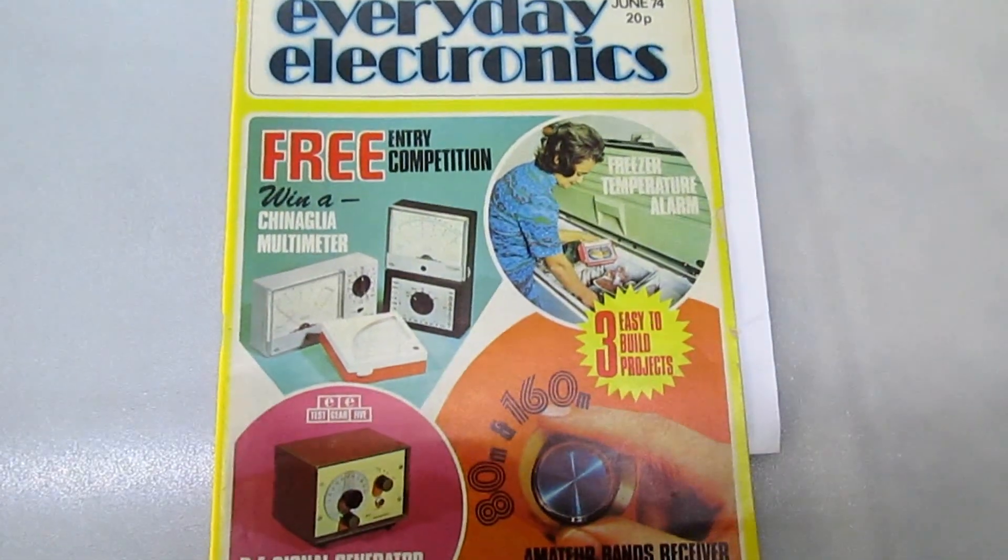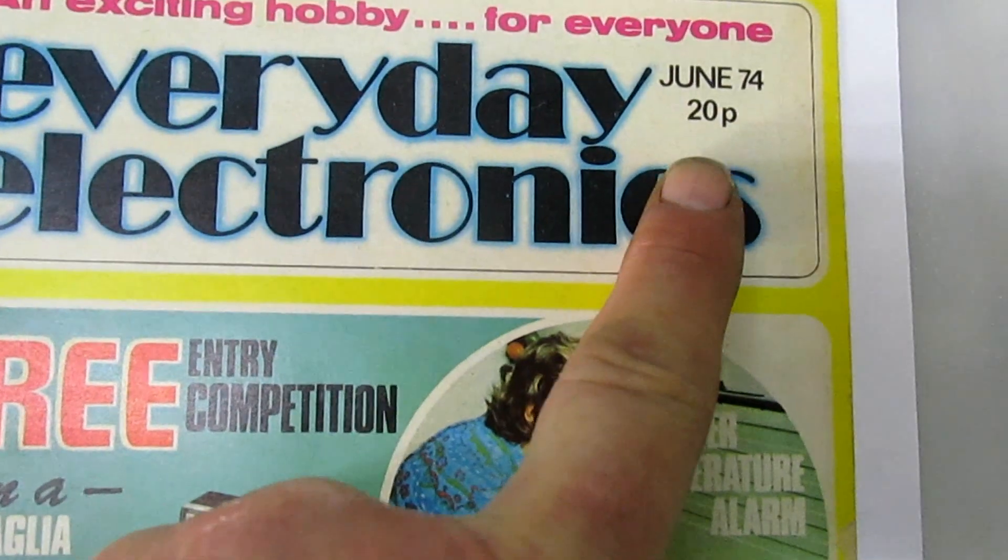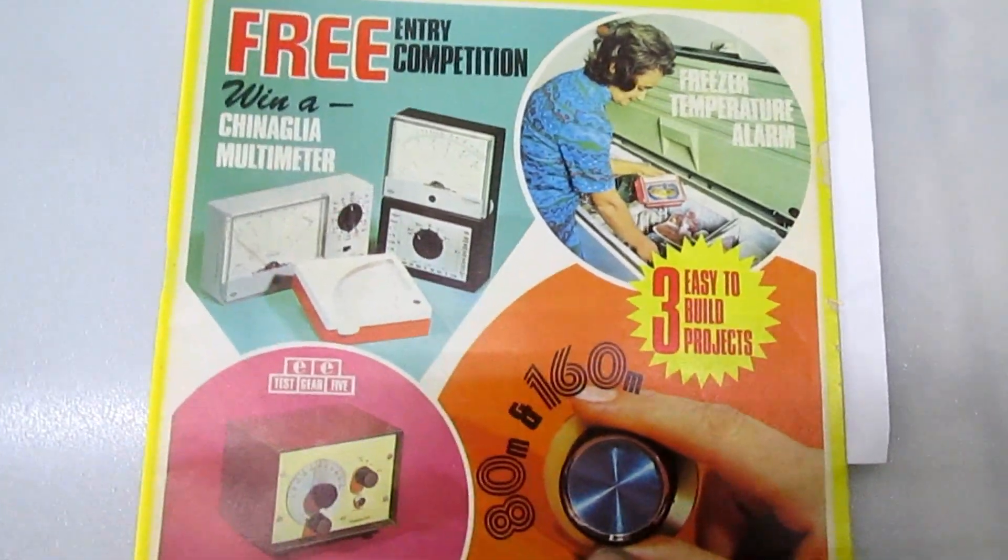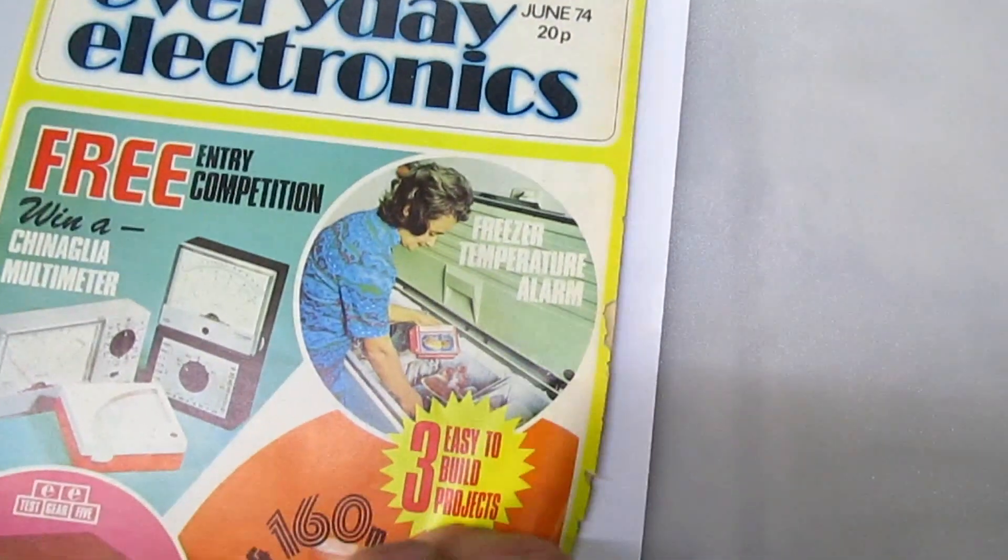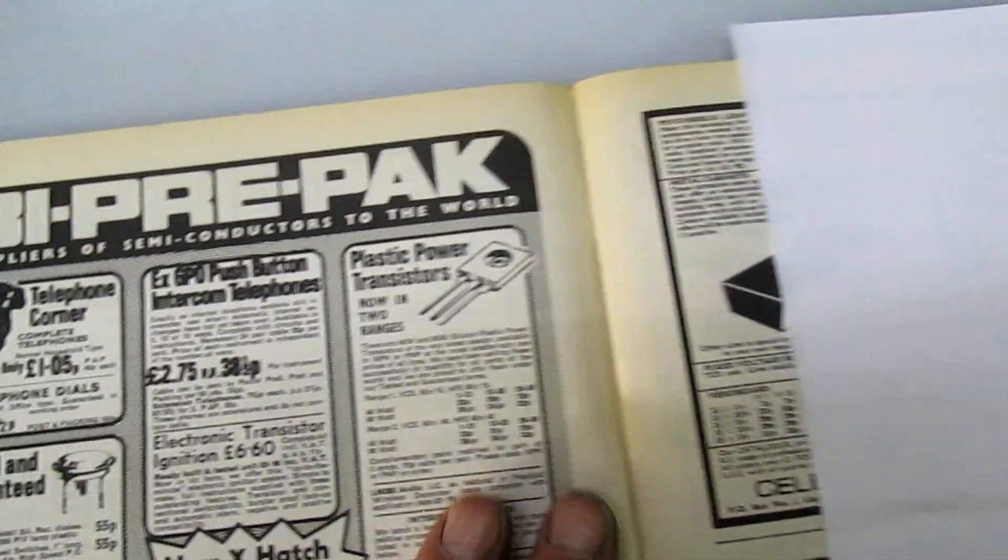Here we've got Everyday Electronics magazine, dated June 1974. Continuing with the manufacturer's reject, I've highlighted a page here.